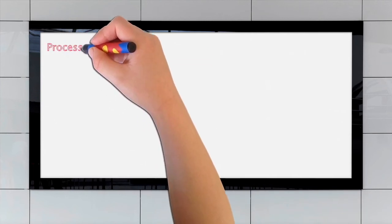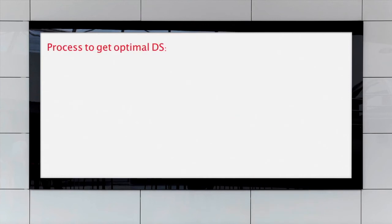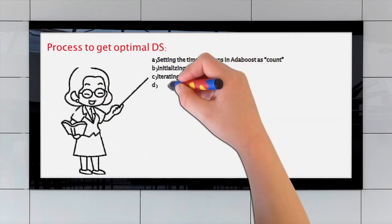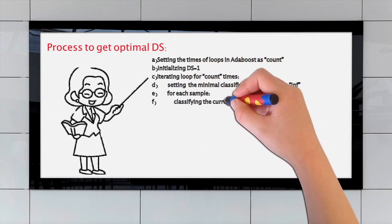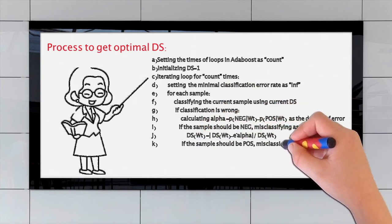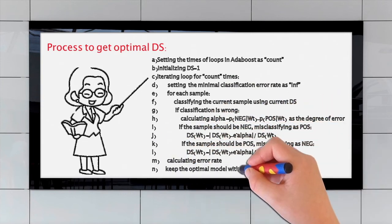Next, let's go over the process to get the optimum DS. Because Adaboost is an iterative process, we can find the optimal DS by iteration of gradient descent. In the end, the optimal DS means the minimal error rate.